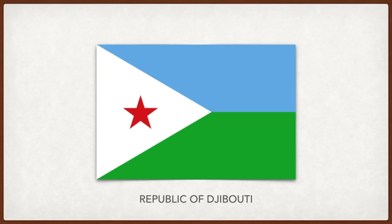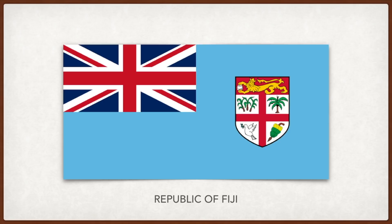Between the arms of the cross are local Fiji symbols — sugarcane, palm tree, bananas, and a dove. Cyprus: the flag is meant to be a neutral symbol between Turks and Greeks; the white and the olive branches are meant to signify peace, and the entire country's silhouette is in the center.